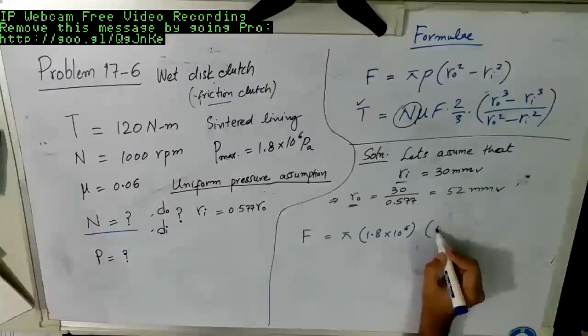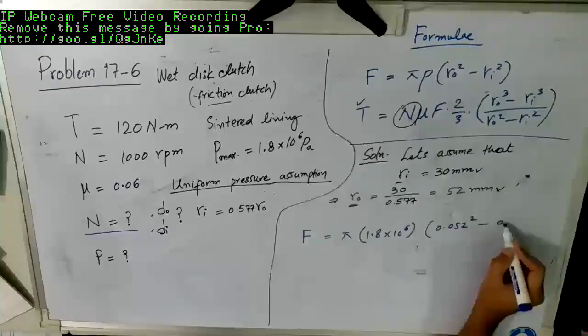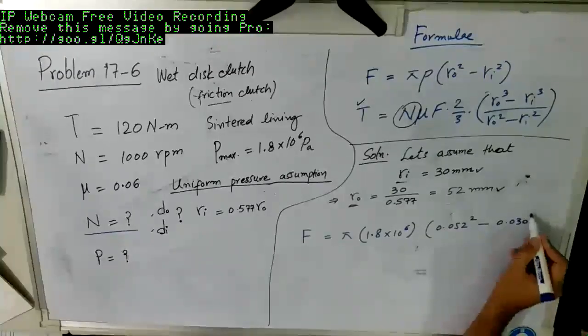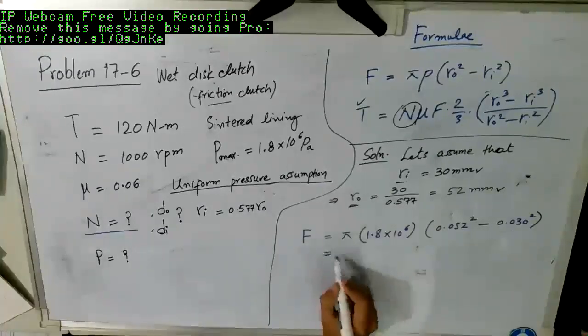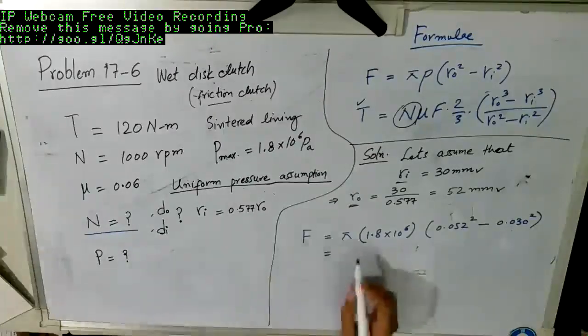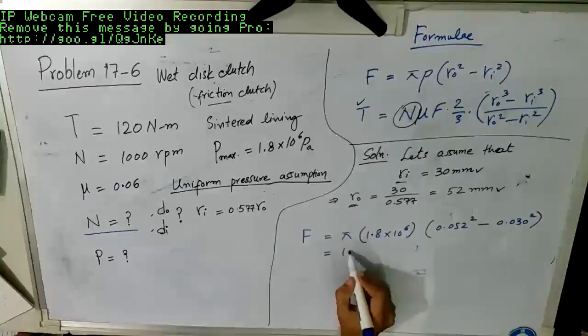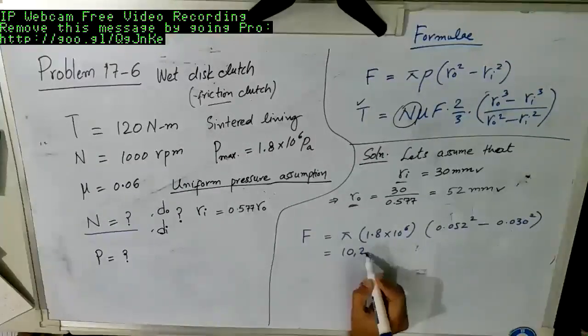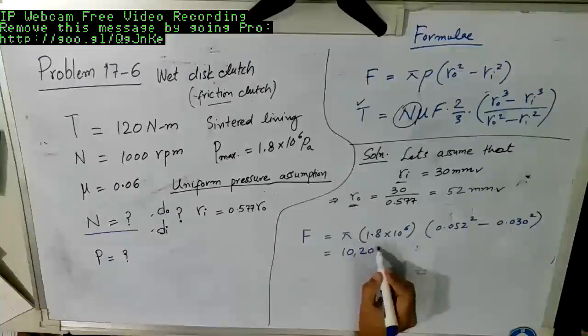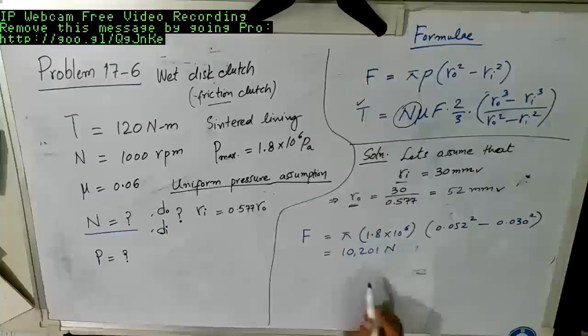And then we have this R outer, so we have 0.052 in meters, squares minus 0.030 square. And when we solve this, we get the axial force which is 10,201 N or about 10.2 kN.